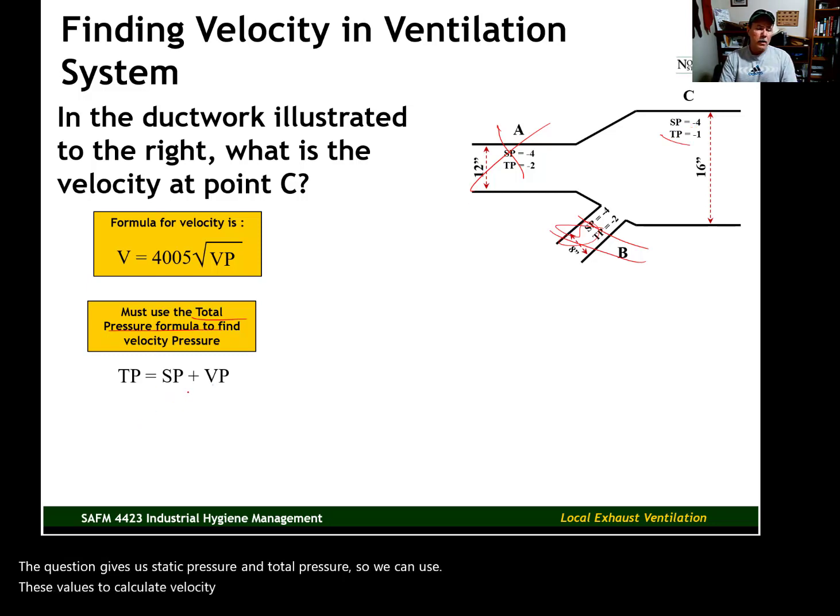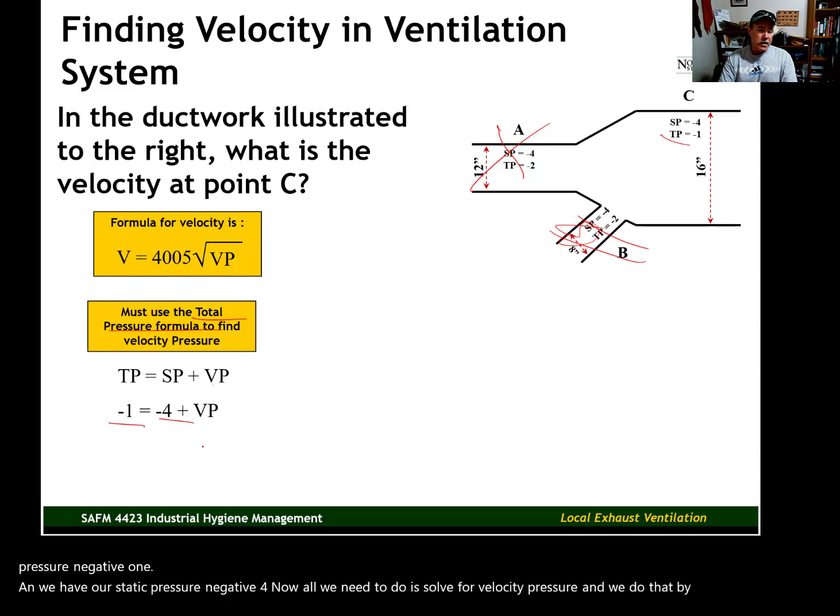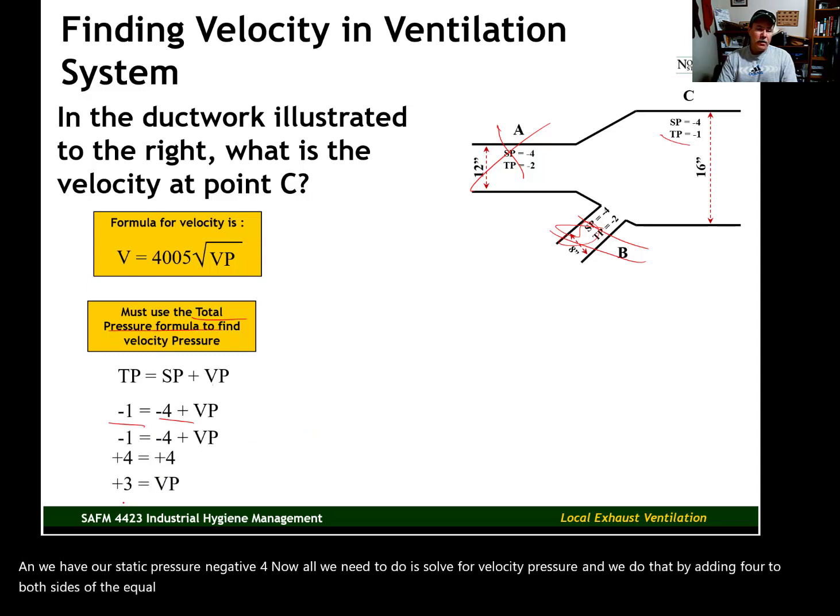Let's just go ahead and plug in what we do know into this formula. We have our total pressure, negative 1, and we have our static pressure, negative 4. Now, all we need to do is solve for velocity pressure. We do that by adding 4 to both sides of the equal sign. When we do that, there it is. Very simple. Our velocity pressure is 3 inches of water column.